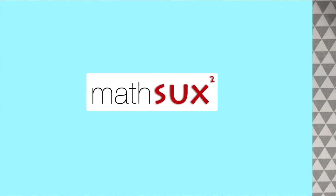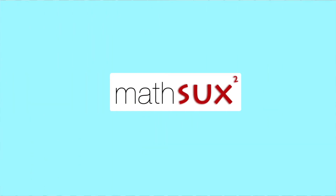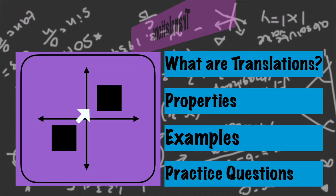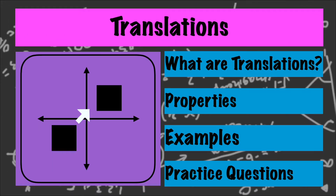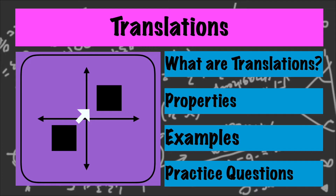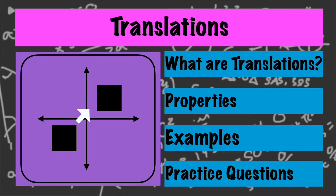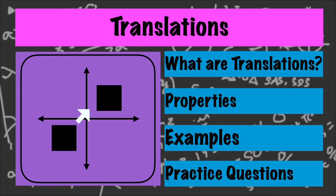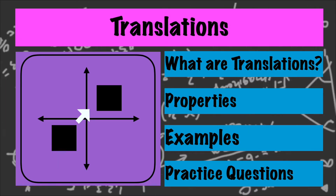Hi everyone and welcome to Math Sucks. This video is going to help you pass geometry. We're going to go over translations in relation to transformations and geometry. First we'll go over what translations are, then we'll look at translation properties and rigid motion, we'll look at two different examples, and then you can try the practice questions on your own at the end of this video.